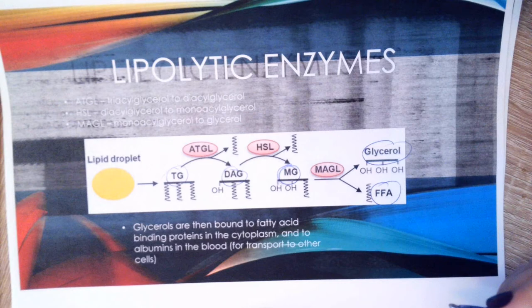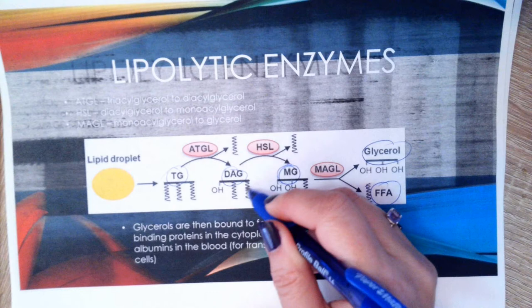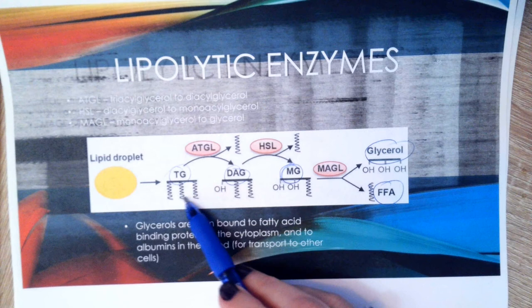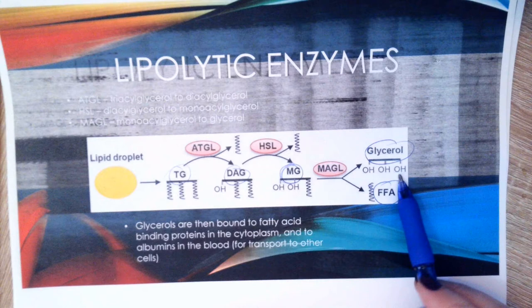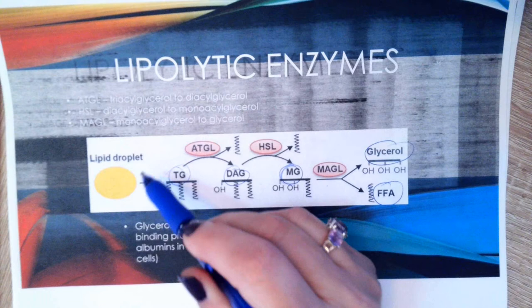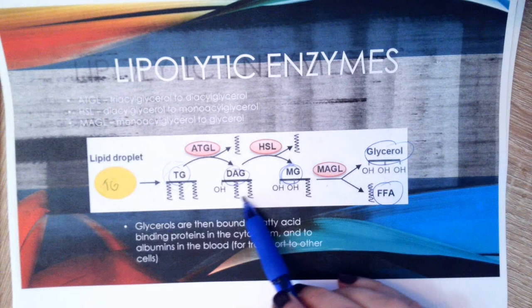You can see the squiggly lines representing fatty acids: three on the triglyceride, two on the diglyceride, one on the monoglyceride. The glycerol is the backbone with the fatty acids hanging off. These enzymes work sequentially — going from three fatty acids to two, to one, to none — to break down the stored fat inside the adipocyte.